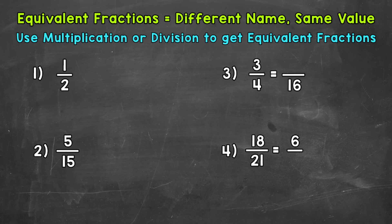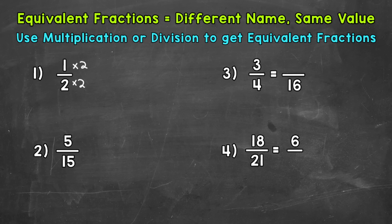Let's jump into number one, where we have probably the most common and well-known fraction: 1 half. We're going to find three equivalent fractions to 1 half. We cannot use division for 1 half because the only common factor of 1 and 2 is 1, so we're going to use multiplication. Let's multiply our numerator and denominator by 2: 1 times 2 is 2, and 2 times 2 is 4. So 2 fourths is equivalent to 1 half.